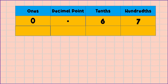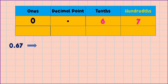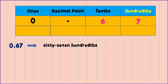How are we going to read this number? We read this as 67, then we're going to say hundredths. So in words we write like this: sixty-seven hundredths. Another example: